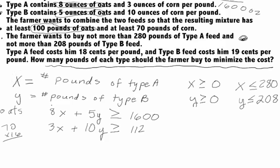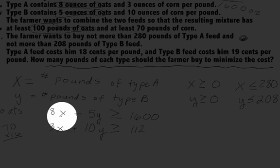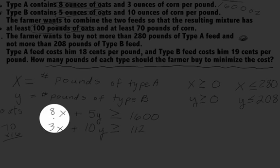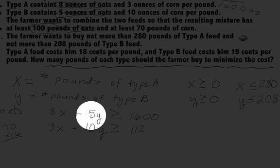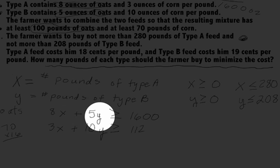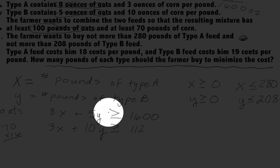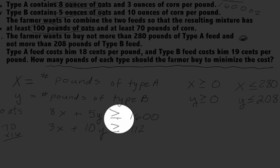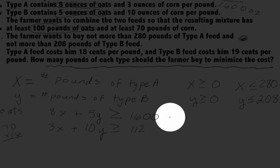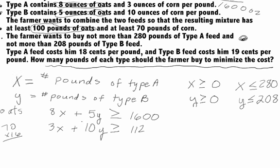For every pound of type A, there are 8 ounces of oats. Since x represents pounds of type A, 8x gives the total ounces of oats from type A. We add 5y for the oats from type B. This total must be at least 1600 ounces, so our inequality is 8x + 5y ≥ 1600.